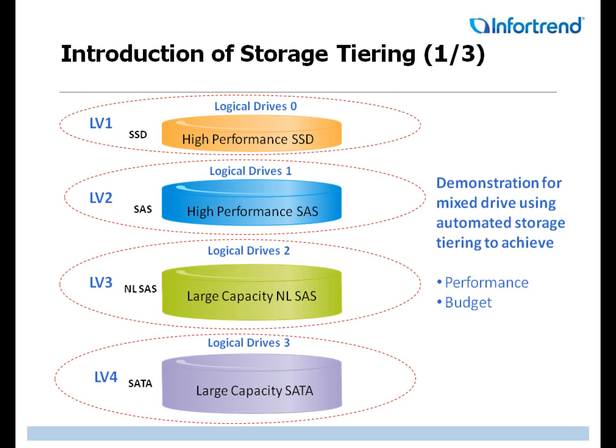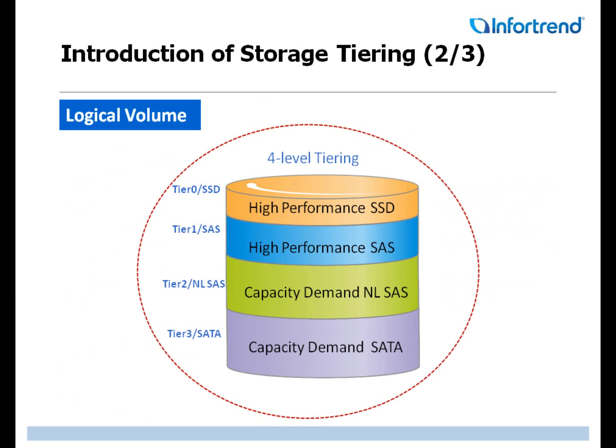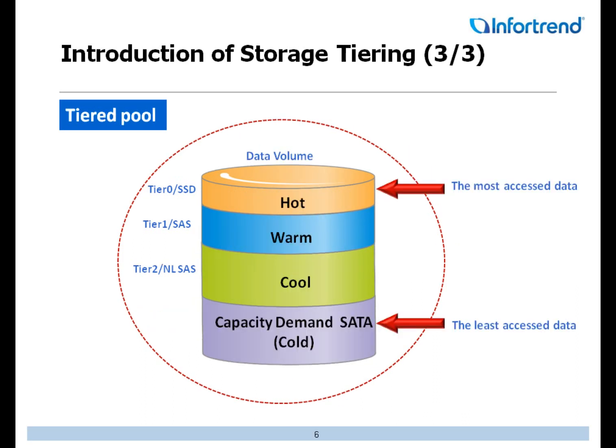In a normal data storage system, we recommend users to use the same disk type to create the logical volume and logical drives where data is moved between different tiered volumes. In a tiered storage system, all volumes are combined into one and the benefits of each different disk type are maximized. Storage tiering systems automatically migrate the most accessed data into faster tiers as hot data and migrate the least accessed data into slower tiers as cold data.